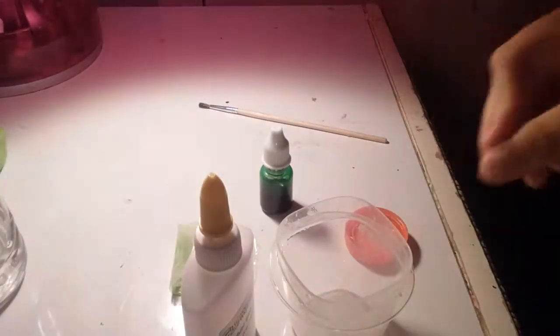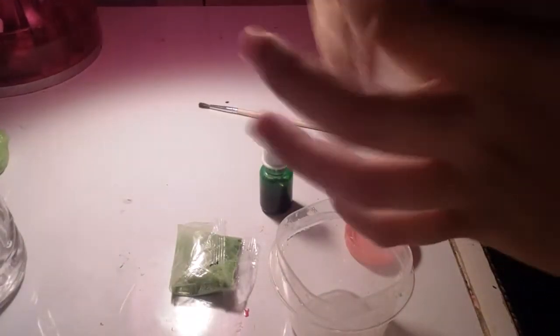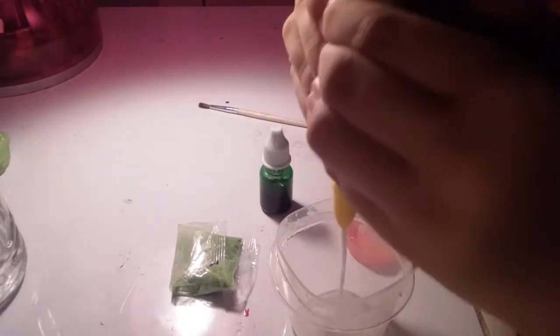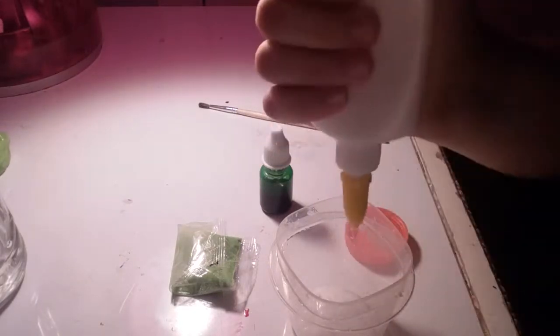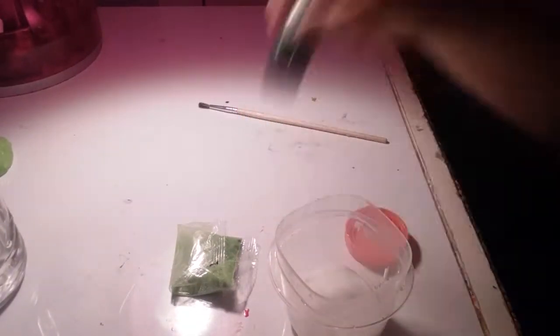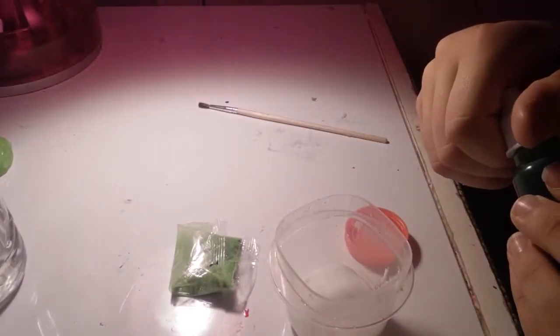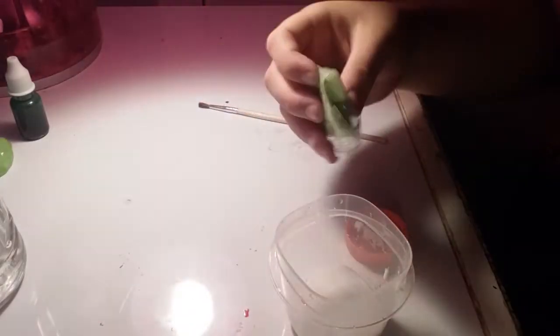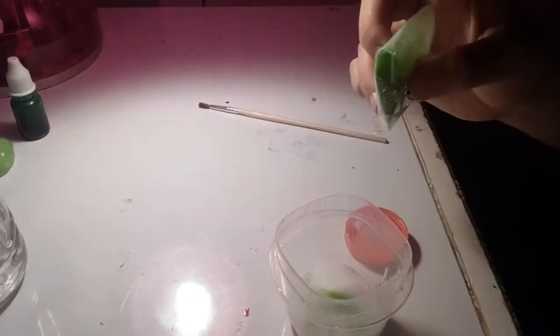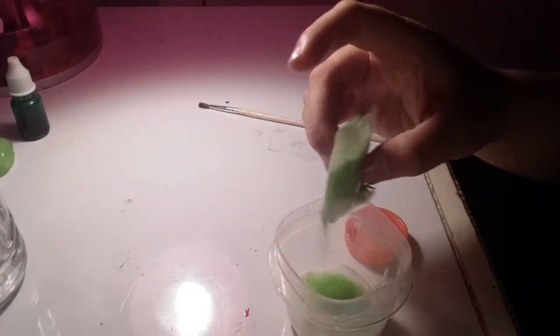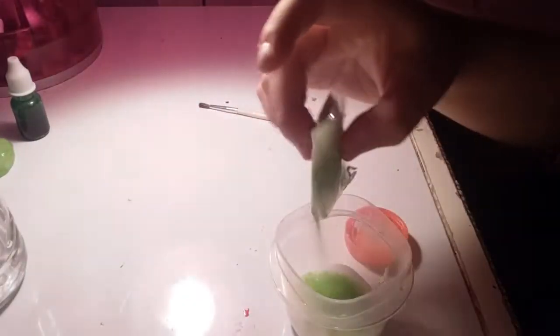So first you're going to take your white glue and pour that in. Once you've done that, add your color. Wait, no, I'm sorry guys, do not add your color. This was actually optional for the gel. I forgot about that. You want to add in just a little bit of the green sand, not too much though.